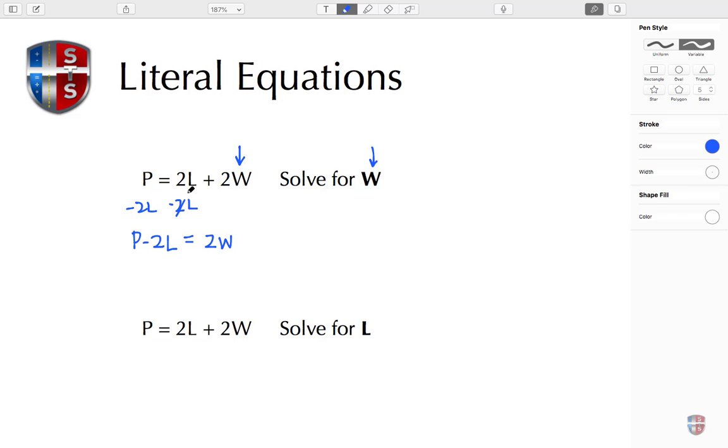Next, I see that the 2 and the W are connected through multiplication, so I'm going to do the opposite, which is to divide. I'm going to divide the right-hand side by 2 and the left-hand side by 2. These twos cancel.